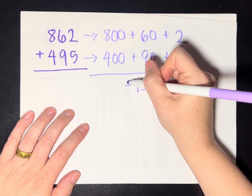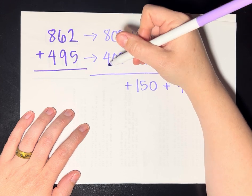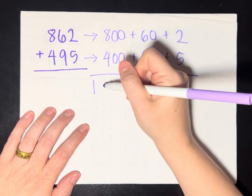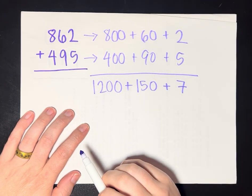So we'll go ahead and put 150 down there. And then 800 plus 400, in the same way I can do 8 plus 4, that gives me 12. And that's 1,200, so I'll write 1,200 there.